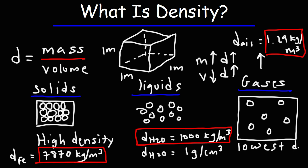So density is a type of concentration — it tells you how much matter you have in a given region of space. Now, not all solids have a higher density than liquids. A good example of this is ice. The density of ice, which is still made up of water, is 917 kilograms per cubic meter — a little bit less than liquid water, which is 1,000 kilograms per cubic meter.